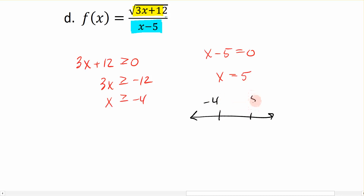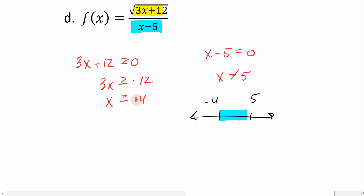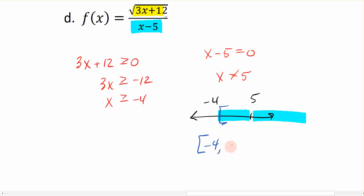Combining both constraints: x must be greater than or equal to −4, but x = 5 is excluded. On the number line, starting at −4 with a bracket and continuing right, we skip over 5 and continue to infinity. The domain in interval notation is [−4, 5) ∪ (5, +∞), where the bracket at −4 reflects the ≥ symbol and parentheses around 5 indicate it is not included.